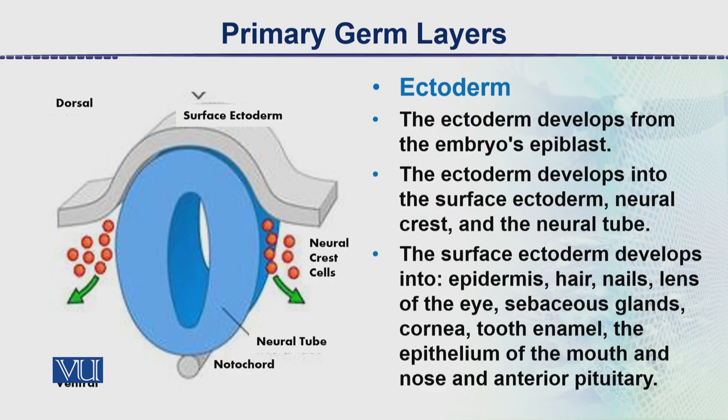The ectoderm is the outer layer. There are no ectoderm cells that enter into the primitive streak or primitive groove — it remains outside. This remaining outside is what makes it a very important layer, and this is part of what we call organogenesis.